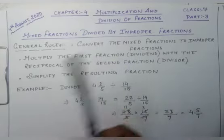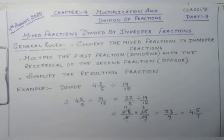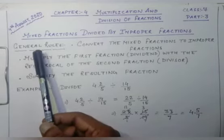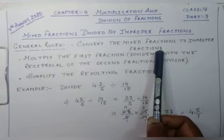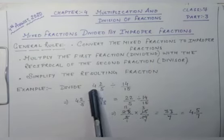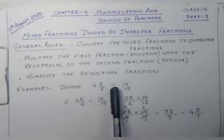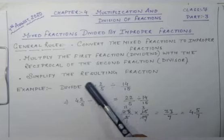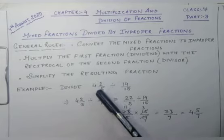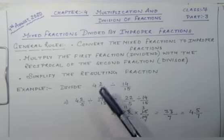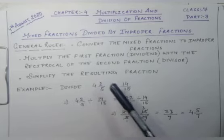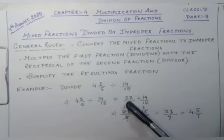The first rule says: convert the mixed fraction to an improper fraction. Here I have taken an example of 4 2/5 divided by 14/15. So first of all I am going to convert this mixed fraction into an improper fraction — that is, 4 fives are 20, plus 2, that is 22 upon 5.